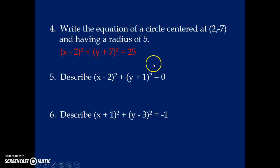This says describe (X - 2)² + (Y + 1)² = 0. Well, we're going to have trouble having a circle with a radius of 0. So frankly, what this is, is just a point. It's a point that is (2, -1).